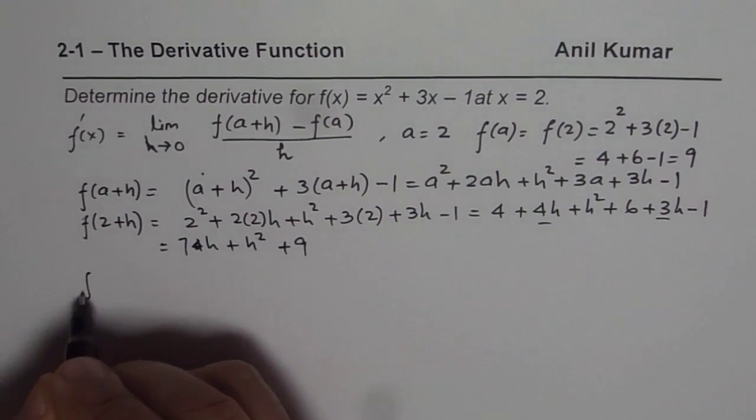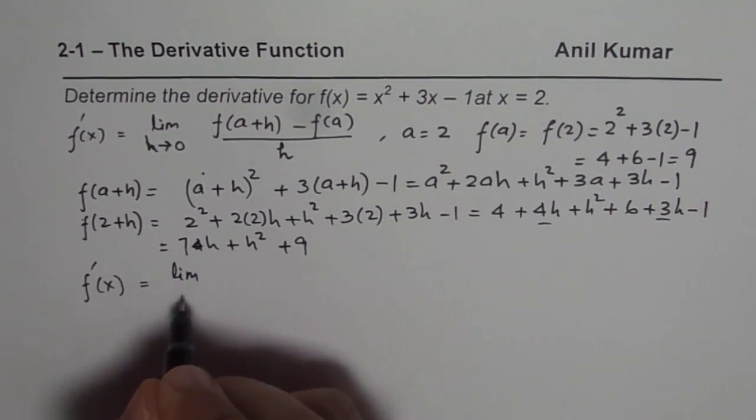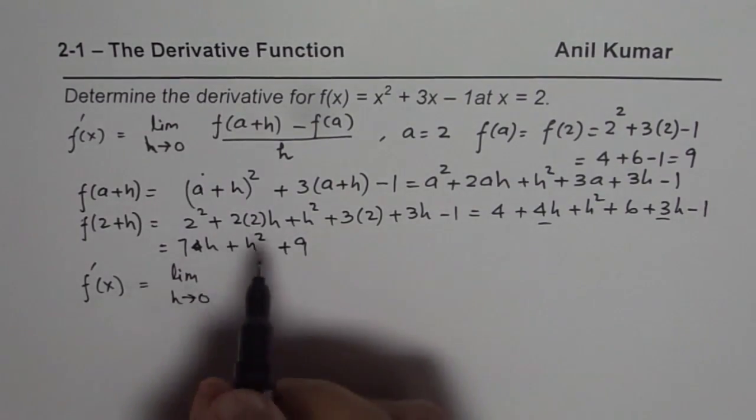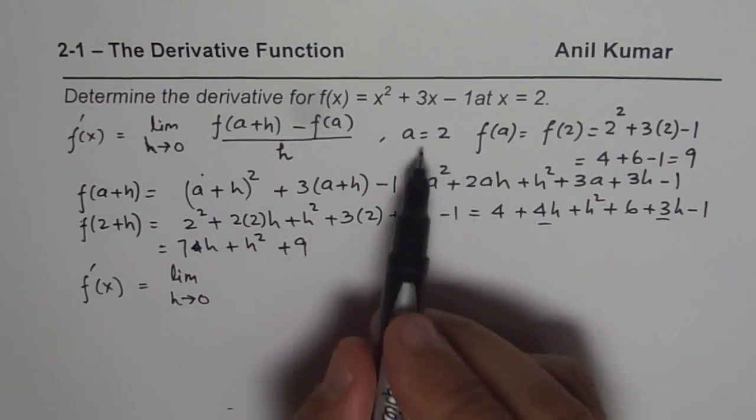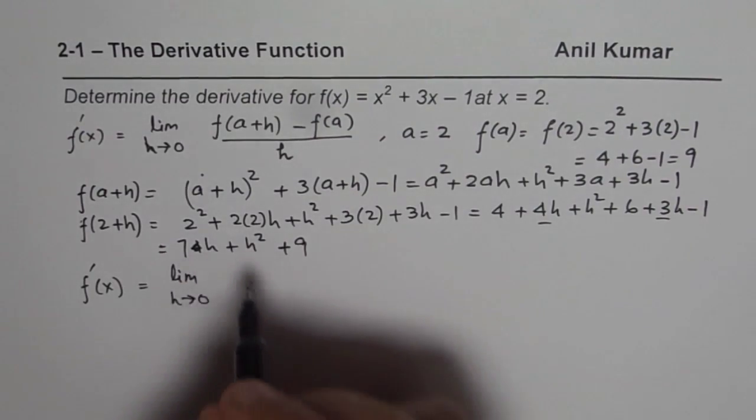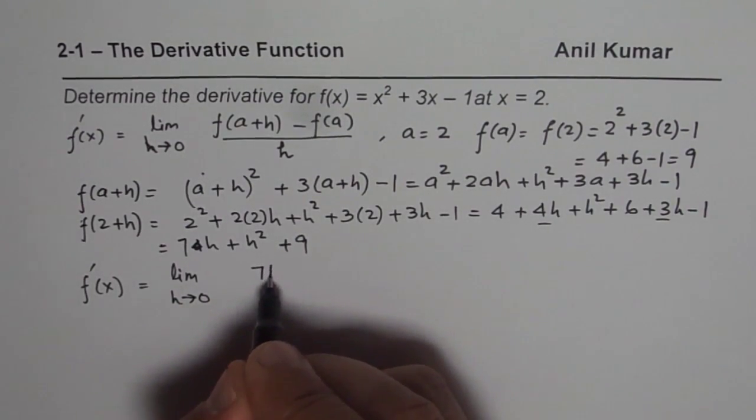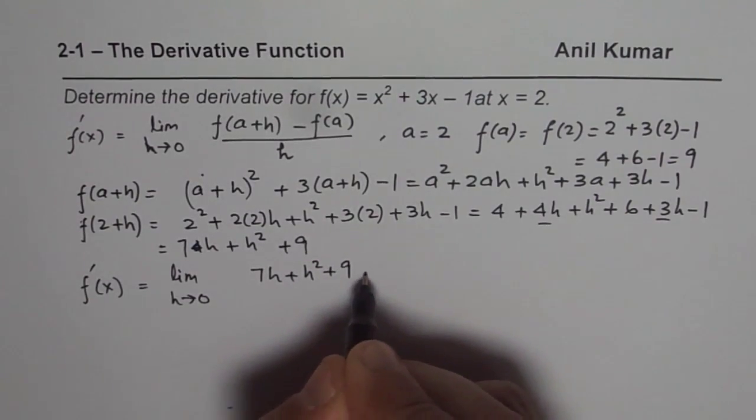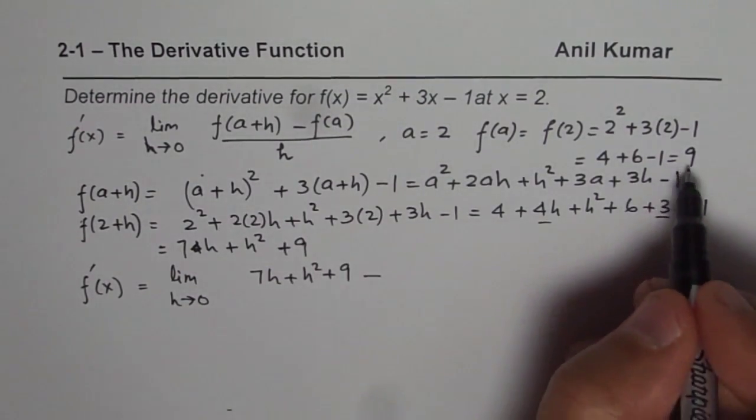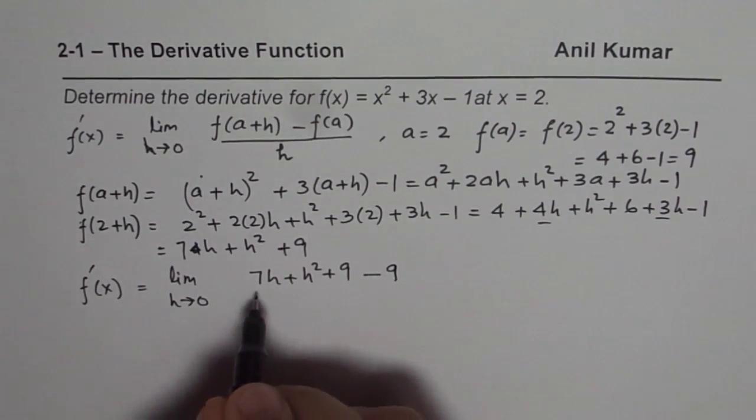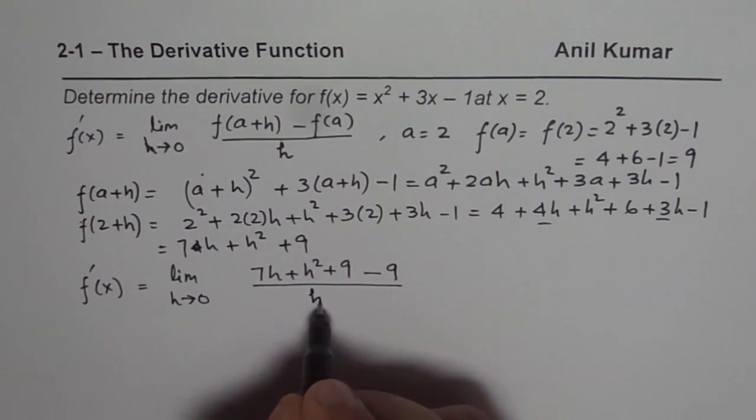So let's write down what is f dash x, f dash x is limit h approaches 0, f a plus h, when a is 2, is 7 h plus h square plus 9. So we write 7 h plus h square plus 9 minus f of a, which we found as 2, minus 9, divided by h.